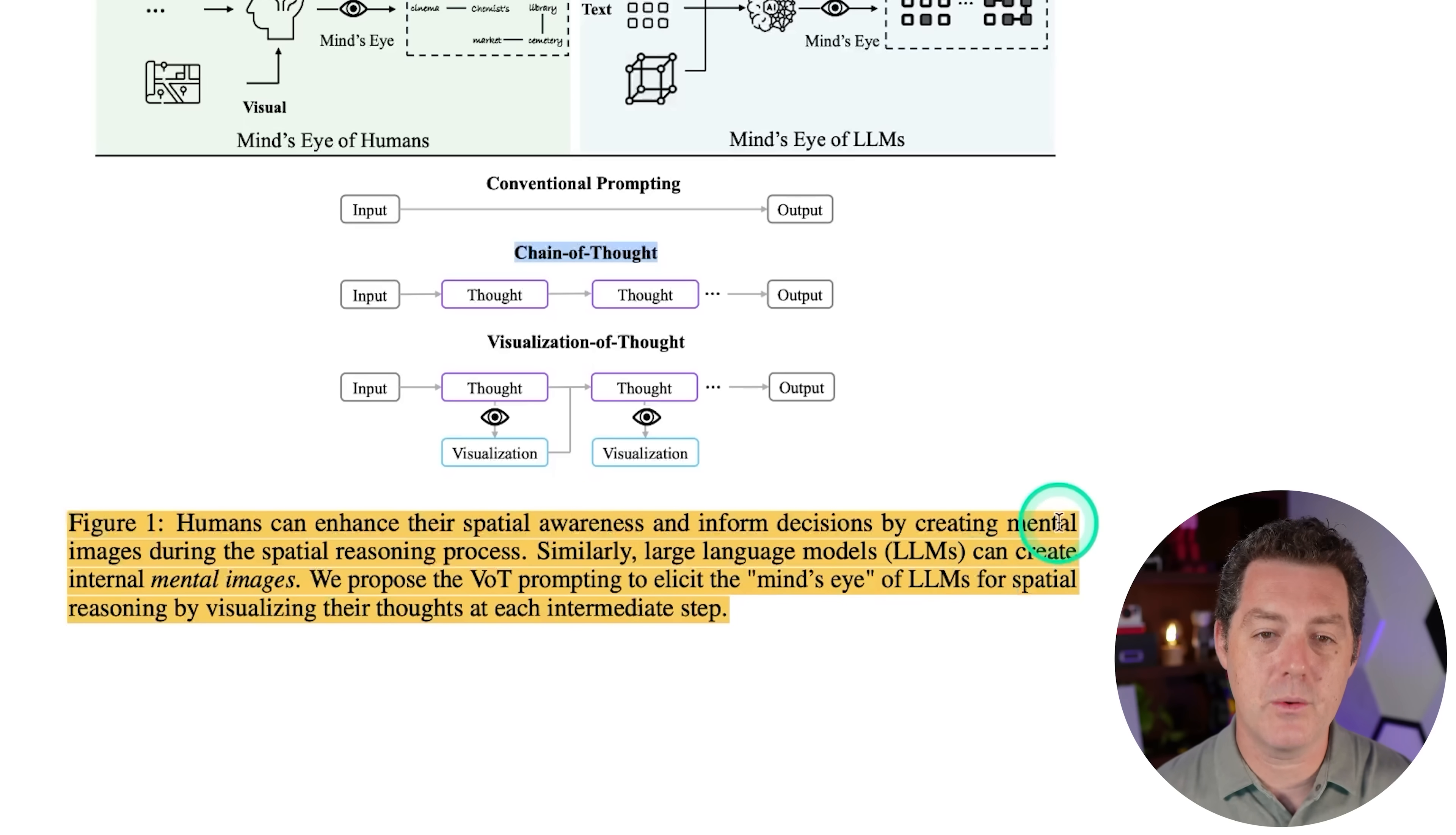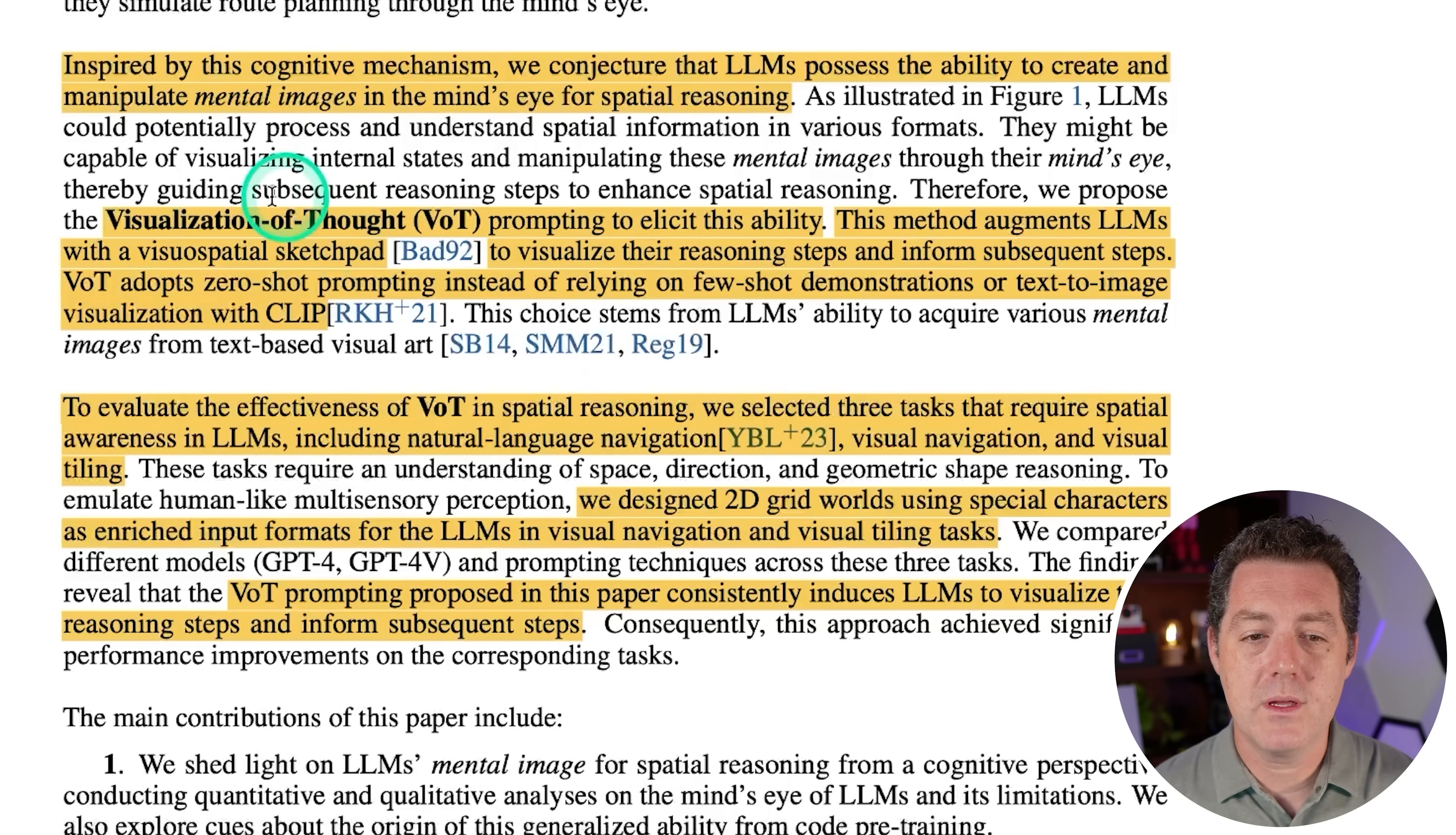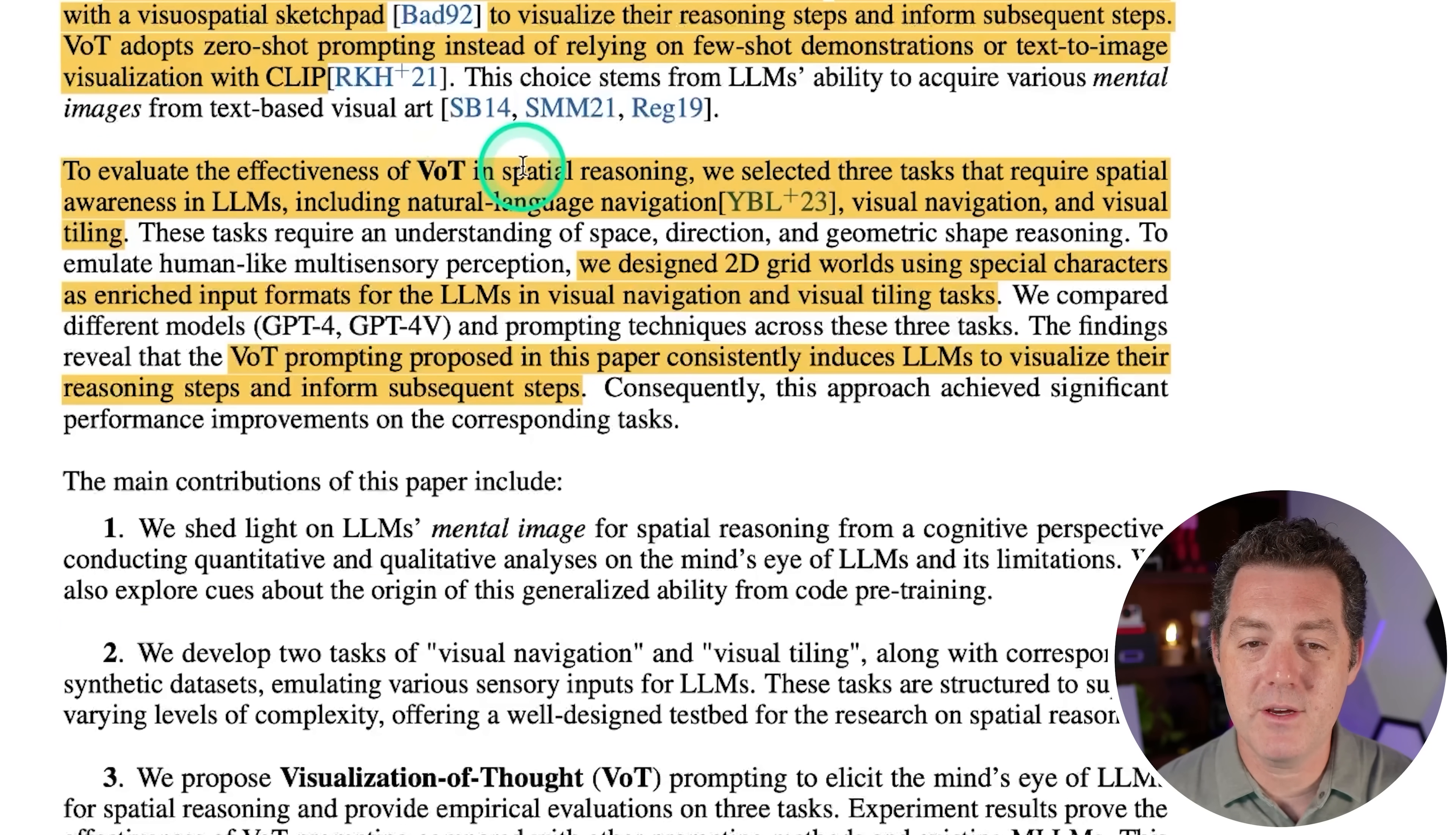So humans can enhance their spatial awareness and inform decisions by creating mental images during the spatial reasoning process. Similarly, large language models can create internal mental images. We propose the visualization of thought prompting to elicit the mind's eye of LLMs for spatial reasoning. So spatial reasoning is super important in basically every aspect of life, whether you're driving, playing video games, playing chess, just walking. Everything you're doing is using spatial awareness as long as you're interacting with your 3D world. So let's talk about visualization of thought. VOT prompting to elicit this ability, this being spatial awareness. This method augments LLMs with a visual spatial sketch pad to visualize their reasoning steps and inform subsequent steps.